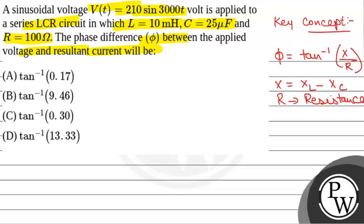Where X equals inductive reactance minus capacitive reactance, XL minus XC, and R is the resistance. The phase difference of a series LCR circuit is given by tan inverse X over R, where X equals XL minus XC.